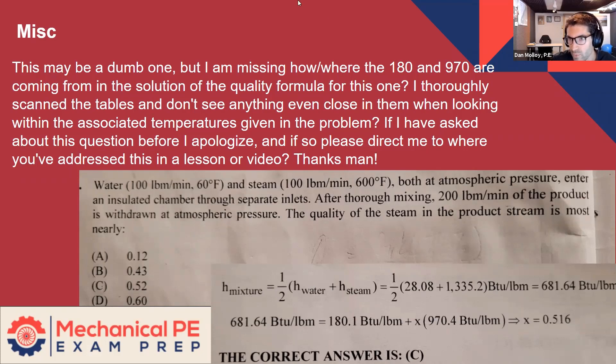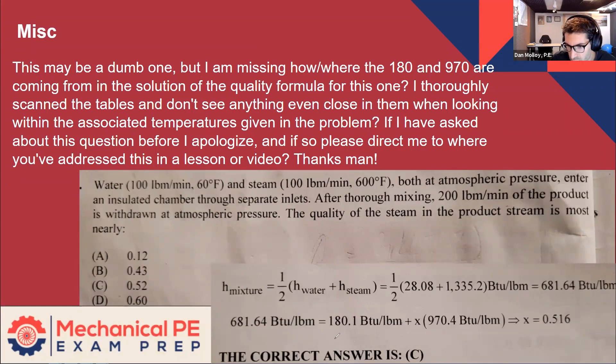These are the enthalpy of a saturated liquid. So this guy right here would be HF, and this guy is HG at the pressure that we care about, which in this case both are at atmospheric pressure. So this is right out of the steam table. You just have to look at properties of saturated water and steam, get the table organized by pressure, and use 14.7 PSIA atmospheric pressure. And this will be HF and this will be HG.